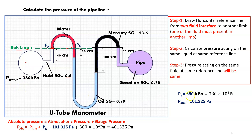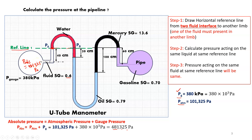The gauge pressure in the first pipeline is given as Pg = 380 kPa = 380×10³ Pa. Atmospheric pressure is 101,325 Pa. Converting gauge pressure to absolute pressure: P_absolute = P_atm + P_gauge = 101,325 + 380,000 = 481,325 Pa. So the absolute pressure in that pipeline is 481,325 Pa.